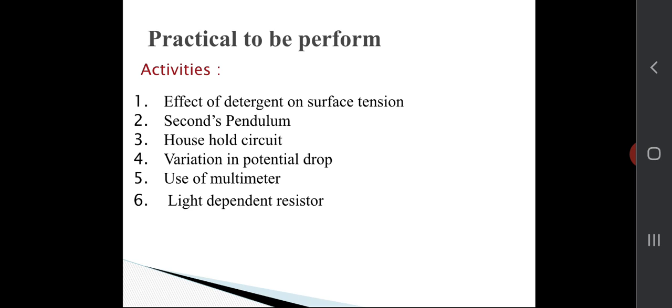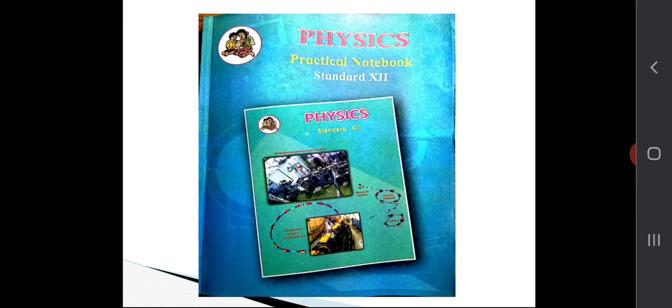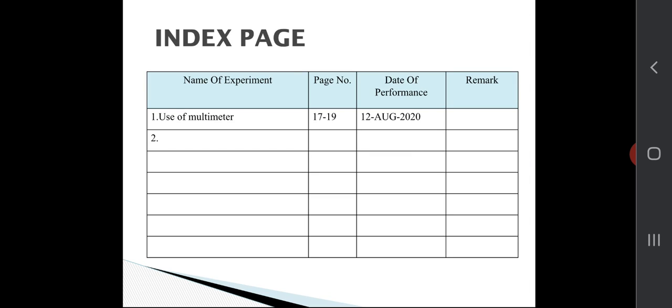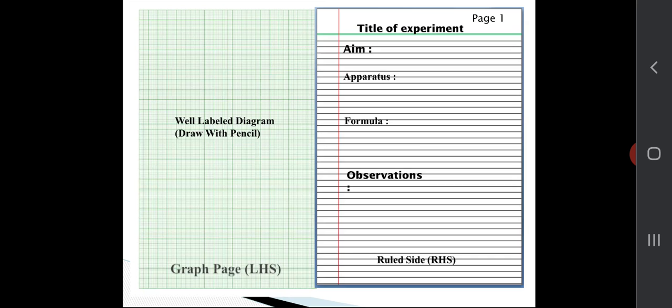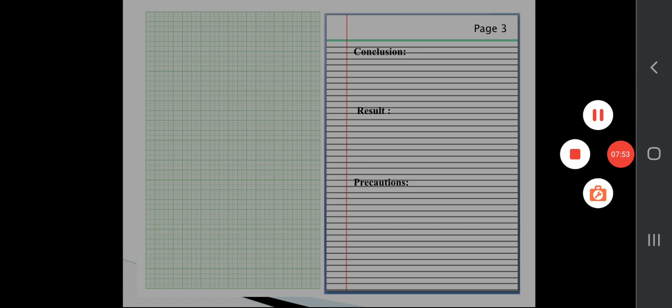In this way, we need to perform experiments and activities, and this is a very small video to guide you how to write the journal. Once again, just have a look how to write it. This is the very simple method to write a physics journal. Thank you so much.